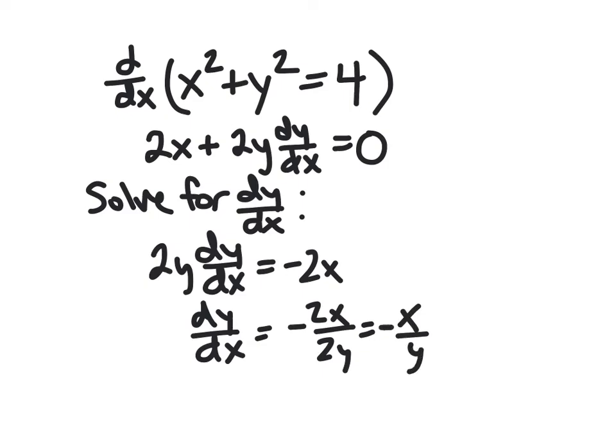And so now notice this is something we haven't seen before. When we've had derivatives in the past, it's just been some function of x. But since our original function here was implicit, our derivative can also be implicit and can involve both x and y.